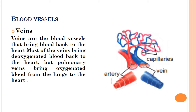The third type of blood vessels are veins. Veins are the blood vessels that bring blood back to the heart. Most of the veins bring deoxygenated blood back to the heart, but there are a few veins which carry blood from the lungs to the heart. These veins carry oxygenated blood because they are getting blood from the lungs, and they are called pulmonary veins.